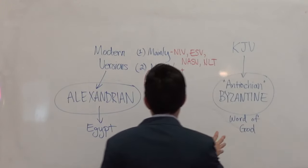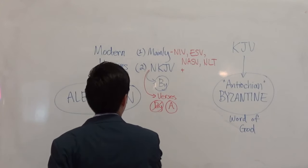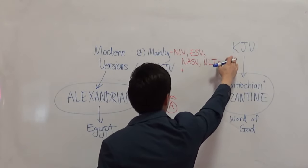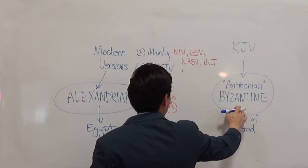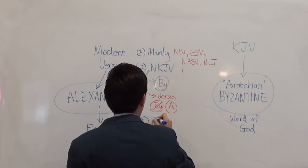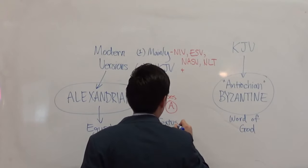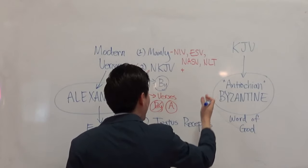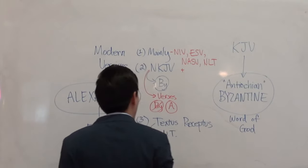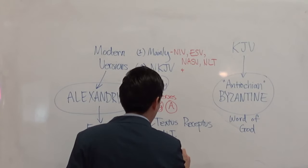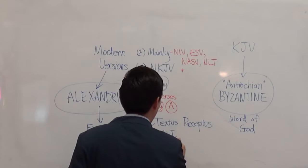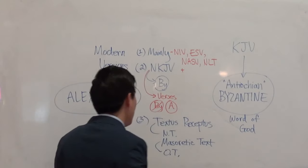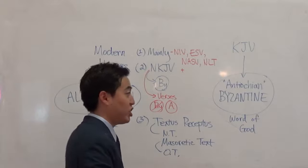The main Alexandrian Bibles are the NIV, ESV, NASB, New Living Translation, and more — these are the most famous modern versions. Scholars admit they came from the Alexandrian family. A third important disclaimer: scholars say the King James Bible's New Testament came from the Textus Receptus, and the Old Testament came from the Hebrew Masoretic text.